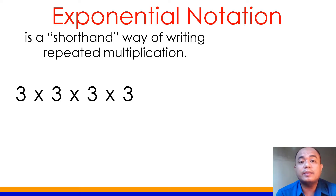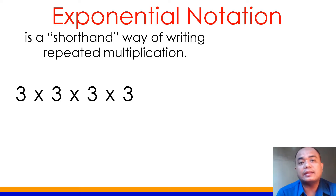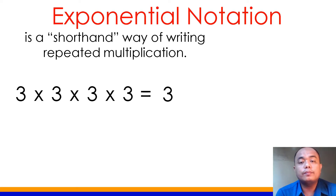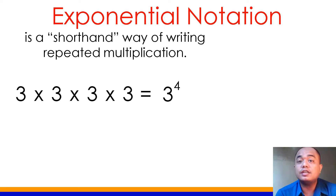The number is being repeatedly multiplied — why not shorten it? We can express this in exponential form. The number expressed in exponential notation is composed of the base and the exponent.